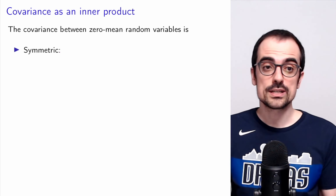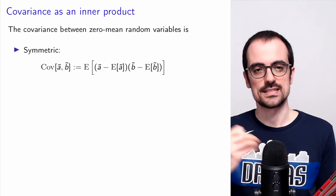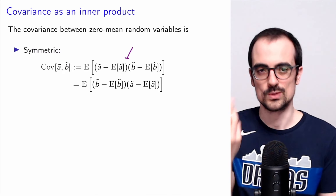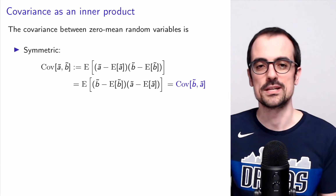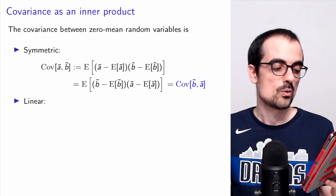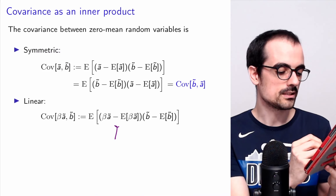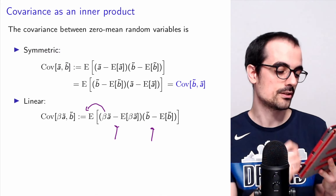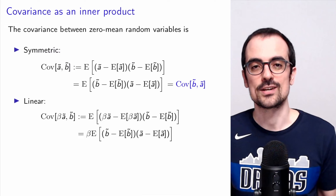Let's establish that the covariance is symmetric. The covariance between A and B is the mean of centered A times centered B. We can just switch the order, because this is a normal commutative product, giving us the covariance between B and A. So the covariance is symmetric even if the random variables are not centered. For linearity: the covariance of beta·A with B is, by definition, the expected value of (beta·A minus its mean) times (B minus its mean). By linearity of expectation, beta can come out, giving beta times the covariance between A and B.